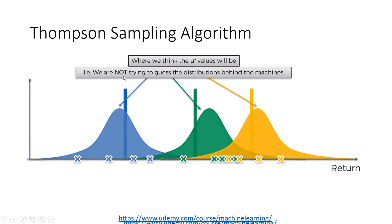This algorithm is not trying to guess the distribution behind the machines, because the machines' distributions are probably not going to be beta distributions. Instead, we need to find the expected value — let's call it mu — which is what we are trying to find. Our distributions should be getting closer and closer to this real expected value with more confidence, meaning they would be sharper and narrower, not so broad.